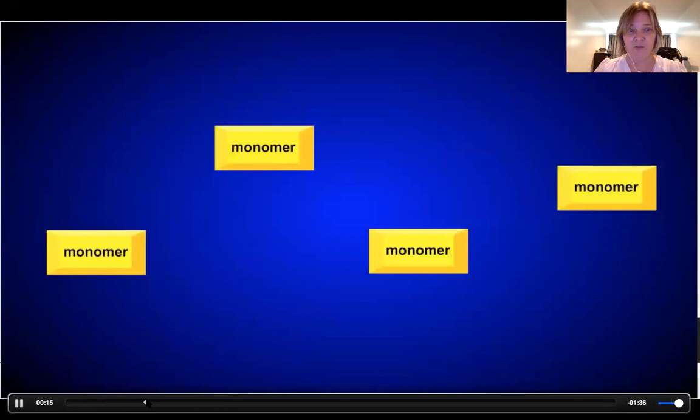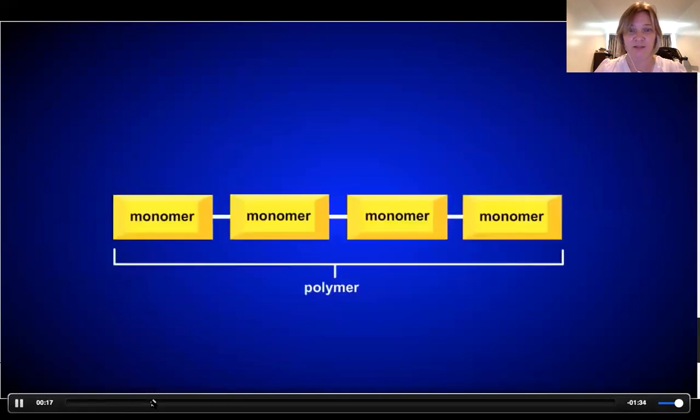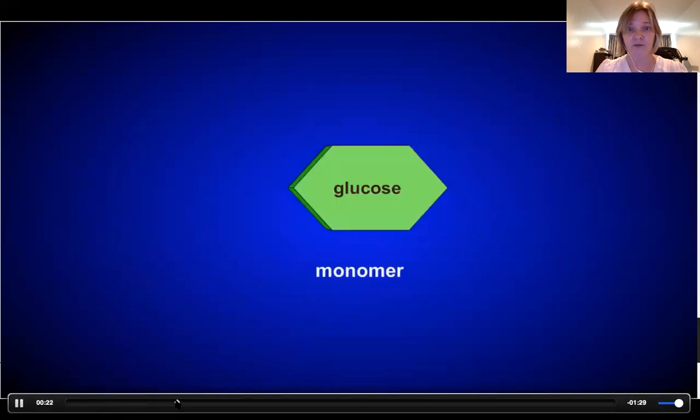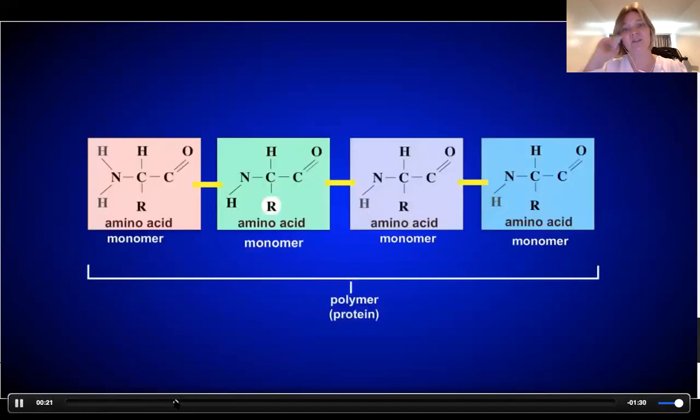We have monomers and we're going to put them together to form a polymer. Here's an example of one of the polymers I was talking about: the protein. The monomer for protein is called an amino acid, and you can see here how they're put together. There are different amino acids that are attached together.